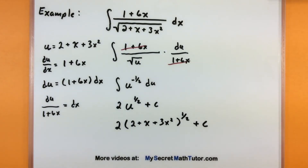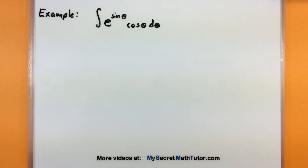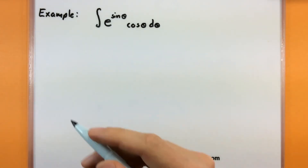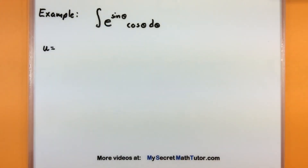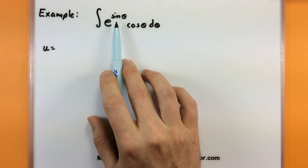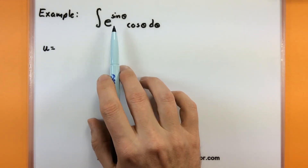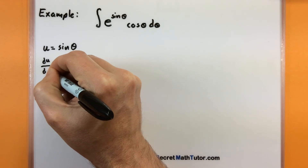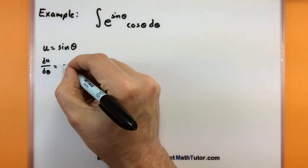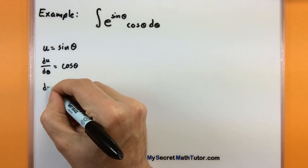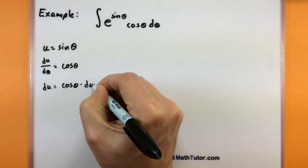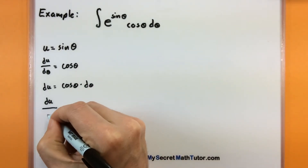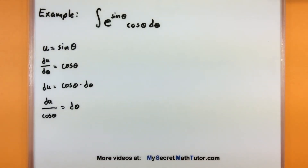U-substitution works just as well even with trigonometric functions, though it's a little harder to see what to choose. Worst case, just try something — if it doesn't work, go back and choose a different u. Here we'll choose u to be sine of theta. My motivation: the derivative of sine turns into cosine, so sine is a great choice. Taking the derivative with respect to theta: du/dθ equals cosine of theta. Solving for dθ: multiply both sides, then divide by cosine of theta to get dθ alone.